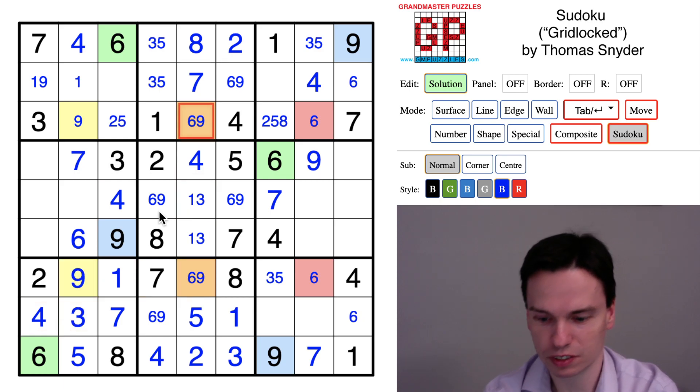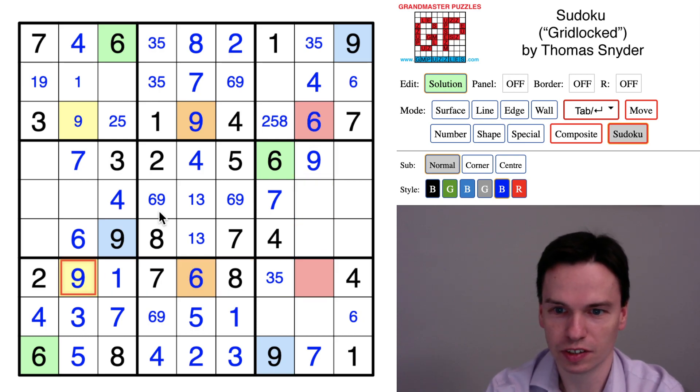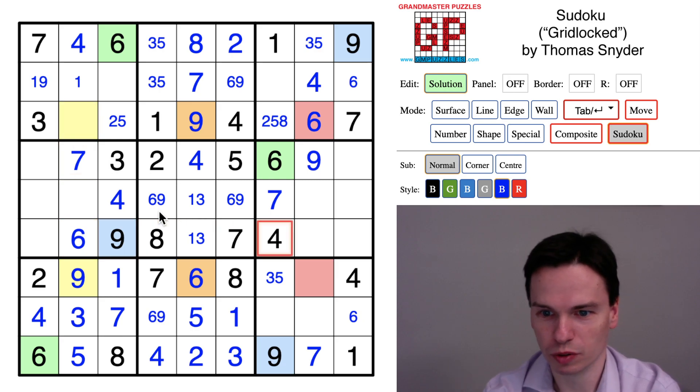Once this nine is placed, the X-wing takes over, nine over there, six down here, six over here, and clear out these cells just to be able to see them more readily.